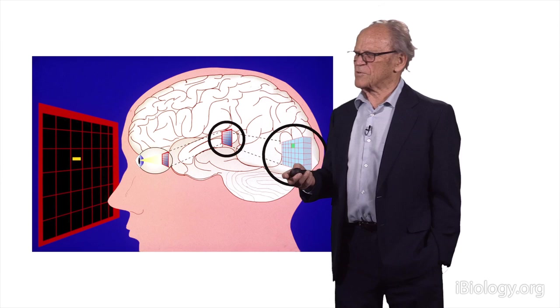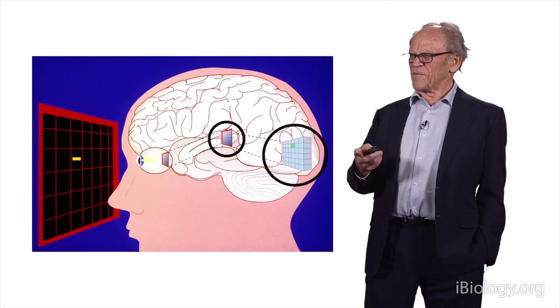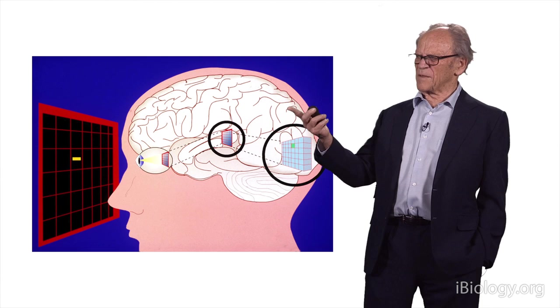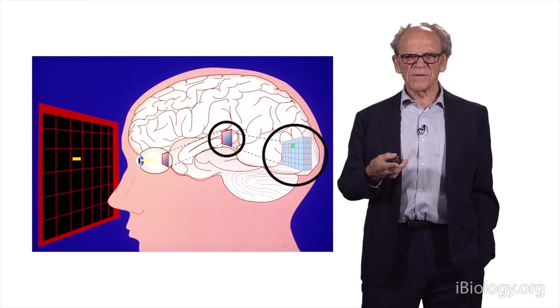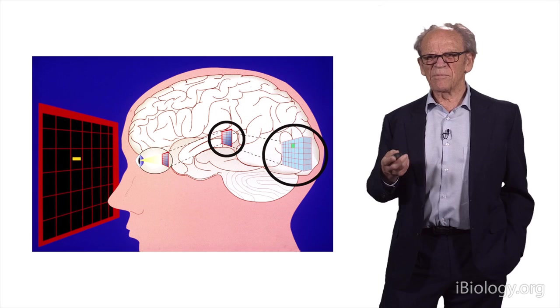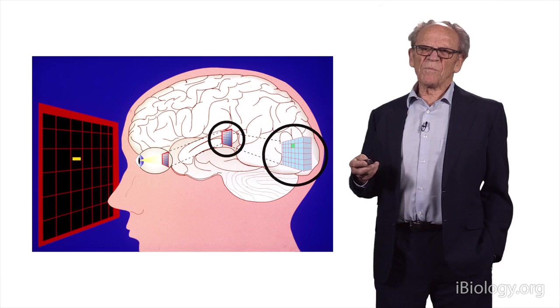One thing important to remember: even if there are a million fibers coming in from the eye to the relay nucleus and hundreds of millions of cells in the primary visual cortex, you can still, by looking at one cell at a time, learn a great deal about how the system works. Some people have said that David and I broke the code about how visual information was processed from the eye and then by the brain.